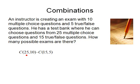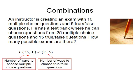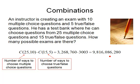I'm going to take the combination of 25 questions choosing 10, and the combination of 15 questions choosing 5. C(25,10) is the number of ways to choose the multiple choice questions, and C(15,5) is the number of ways to choose the true-false questions. C(25,10) gives 3,268,760 and C(15,5) gives 3,003. Multiplying those together gives 9,816,086,280 different exams.